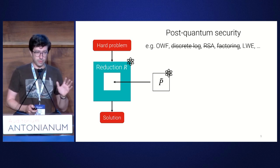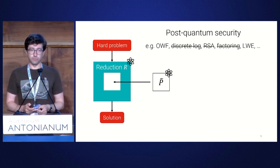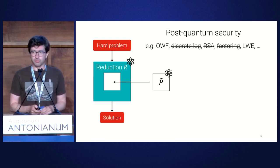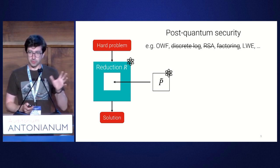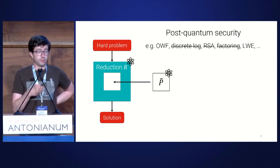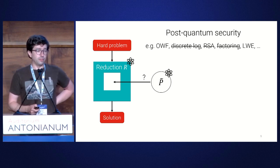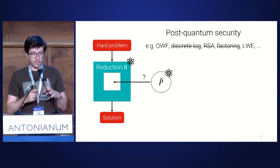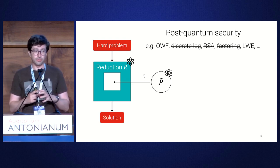We have cryptography we believe to be post-quantum secure since roughly the nineties. The second problem — and the one I'm talking about today — is that a quantum algorithm has a different shape to a classical algorithm. It's kind of like trying to put a round peg into a square hole. The subject of my talk is: when can we come up with reductions that have round holes in them?